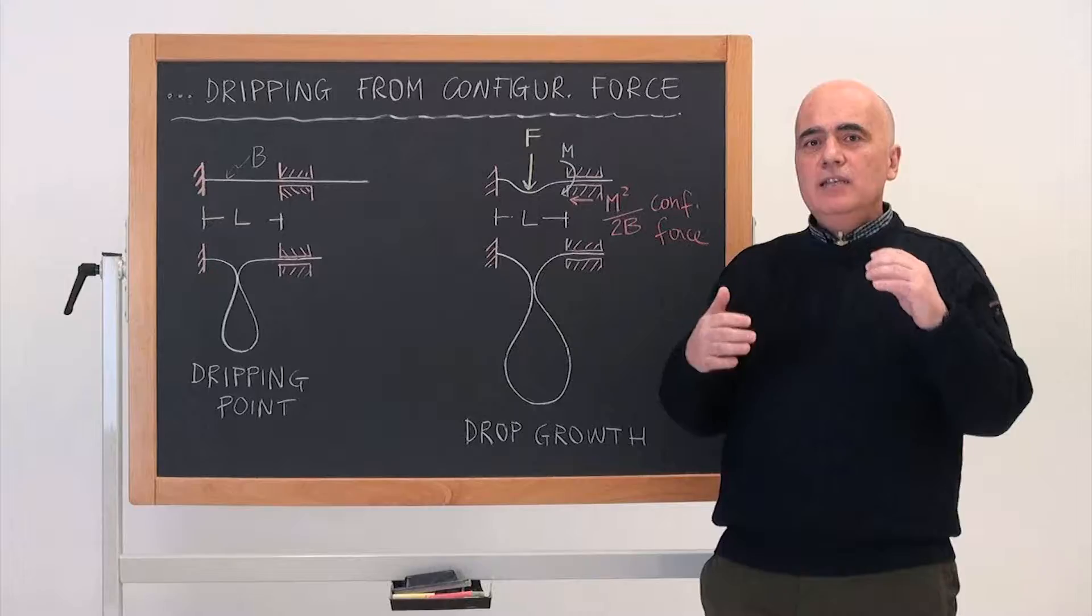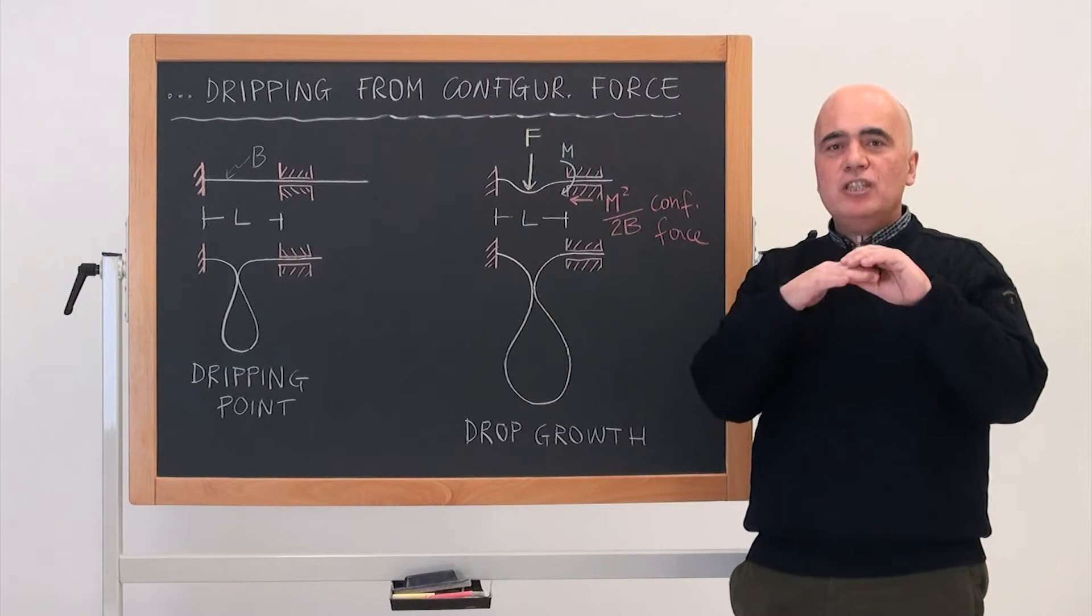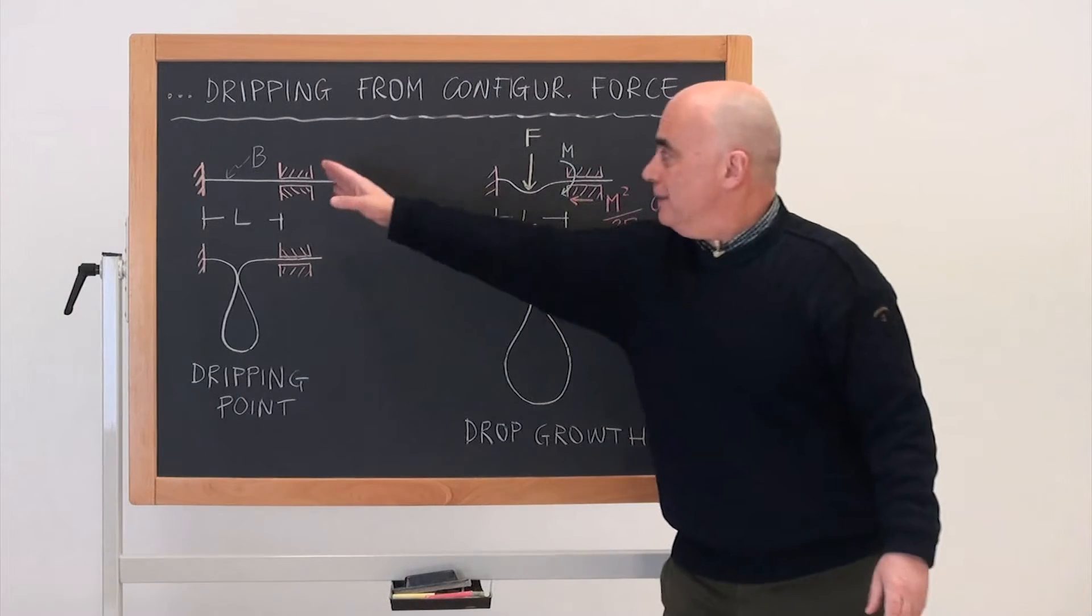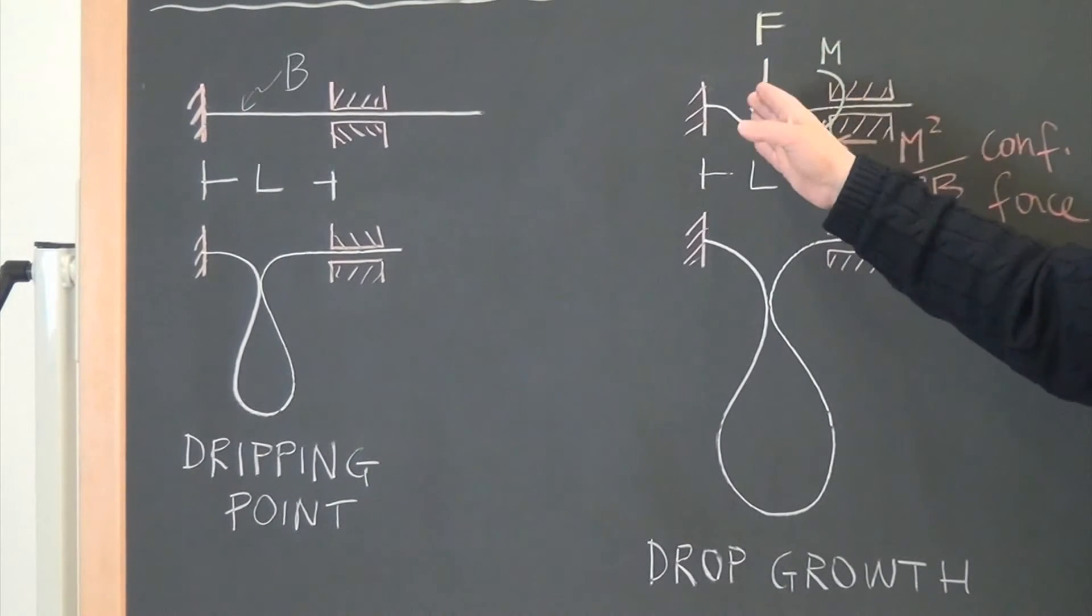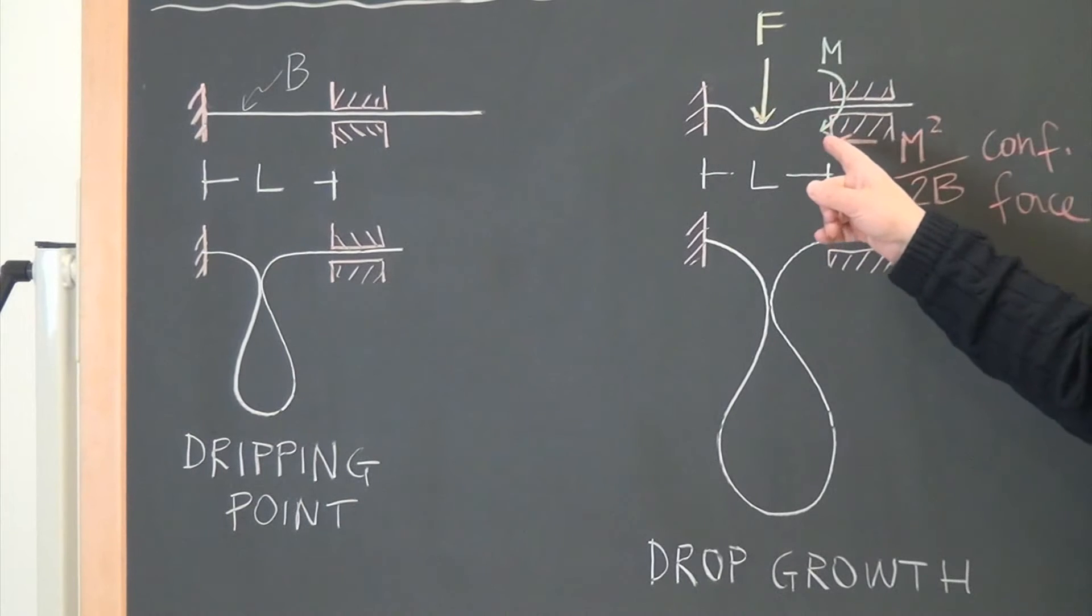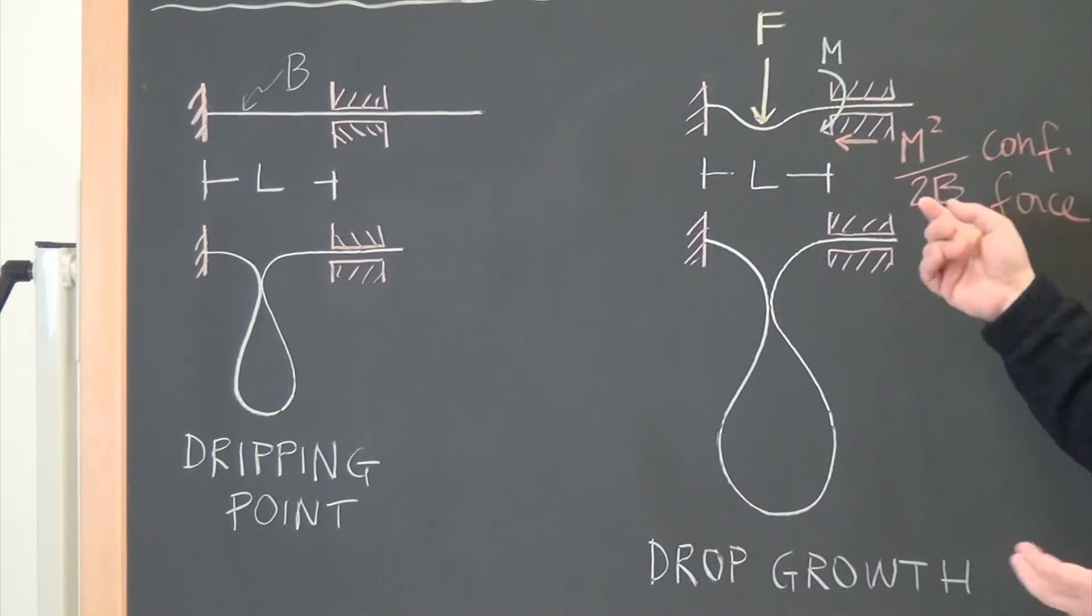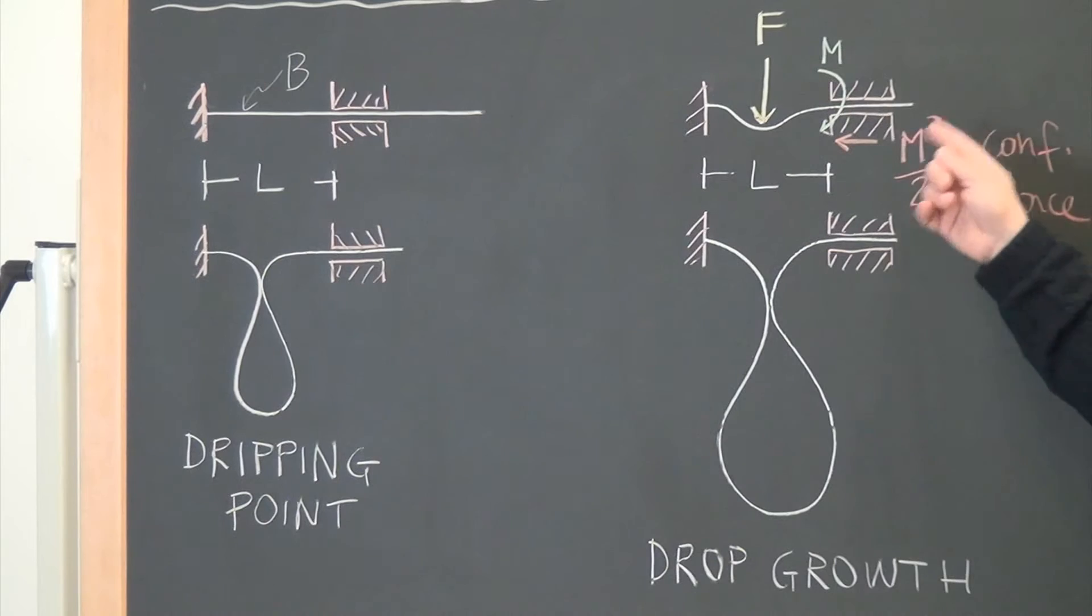A sliding sleeve leaves the possibility of free sliding of the elastic rod, so that if we load this structure transversally with this force F, a bending moment is generated. This bending moment originates a configurational force m squared divided by 2B which is axial and compresses the structure.